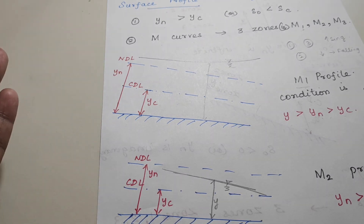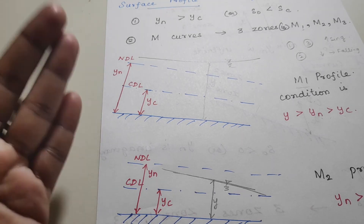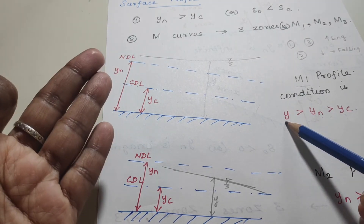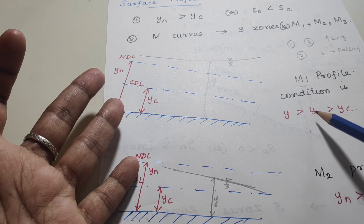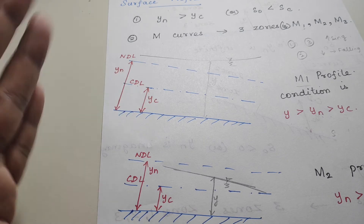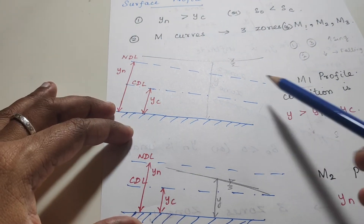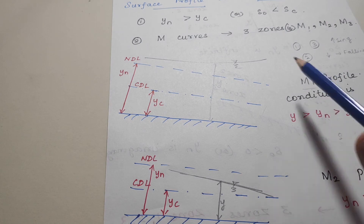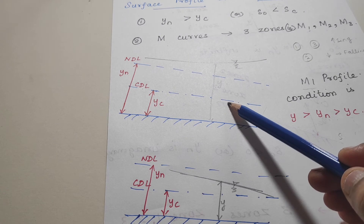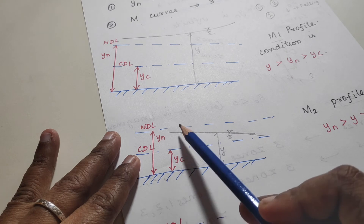Knowing these conditions is useful when solving problems where you need to identify the profile type — whether it is M1, S2, S3, or another. If you know the actual depth, normal depth, critical depth, and the slope type (mild or steep), you can easily determine the profile. For M1, the actual depth is greater than both the normal depth and critical depth.